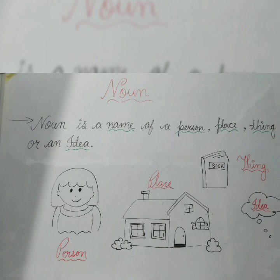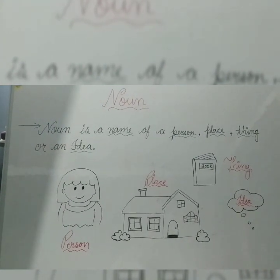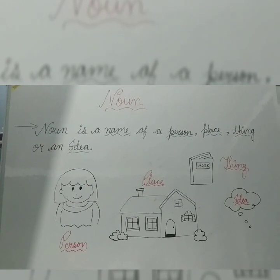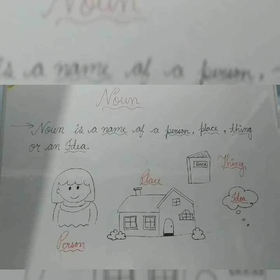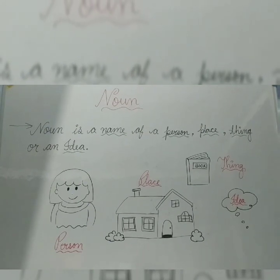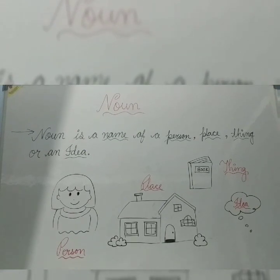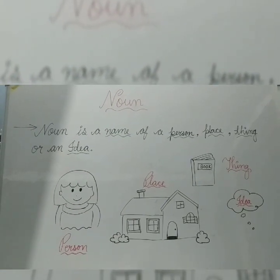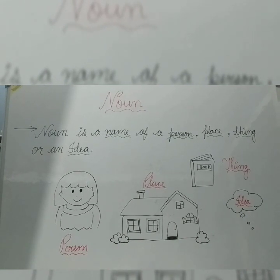As you can see, I have drawn some cute little drawings for you so that you can understand what nouns are. A noun is the name of a person, place, thing or an idea. I have drawn a girl to show a person, a place like a house, a thing like a book. An idea can be anything like love, etc.